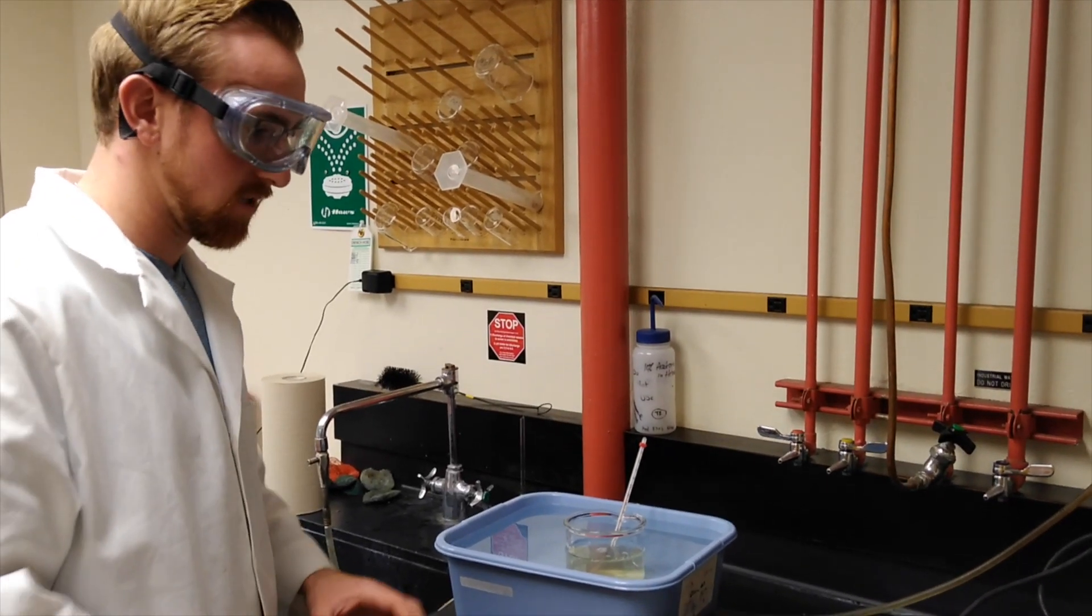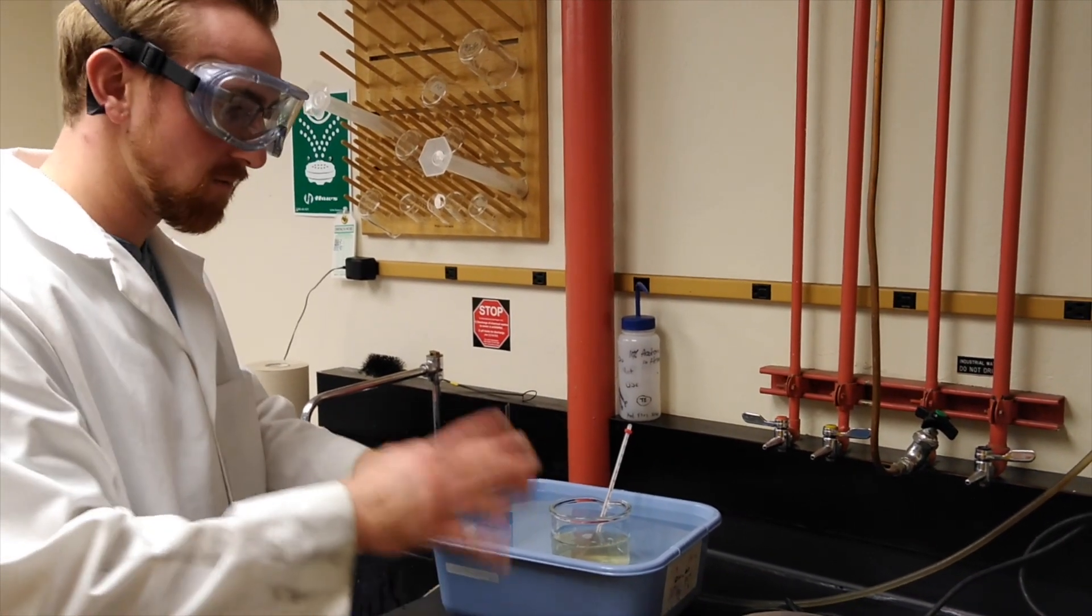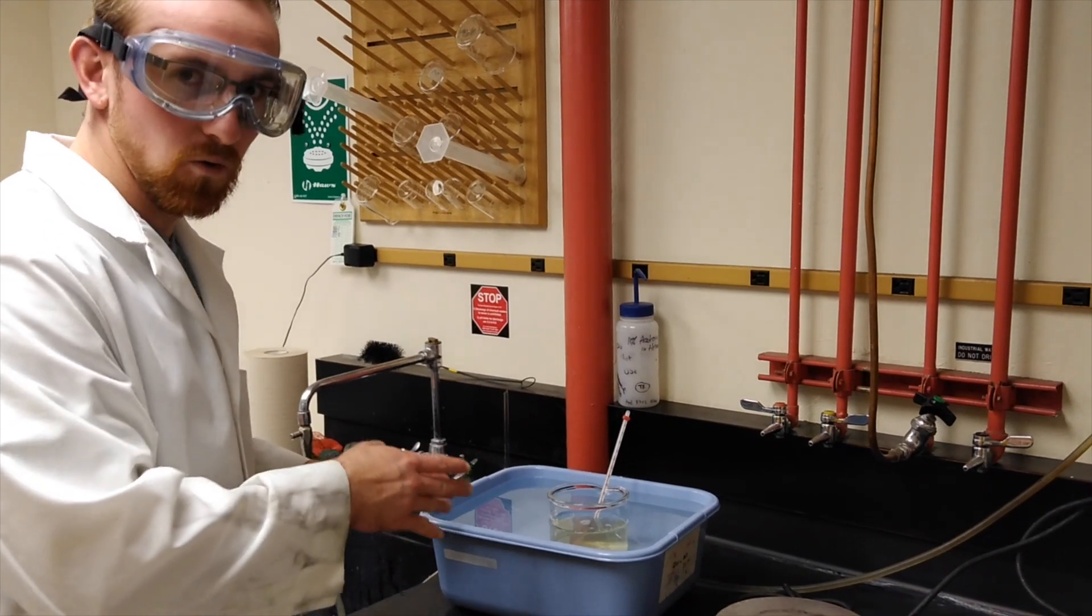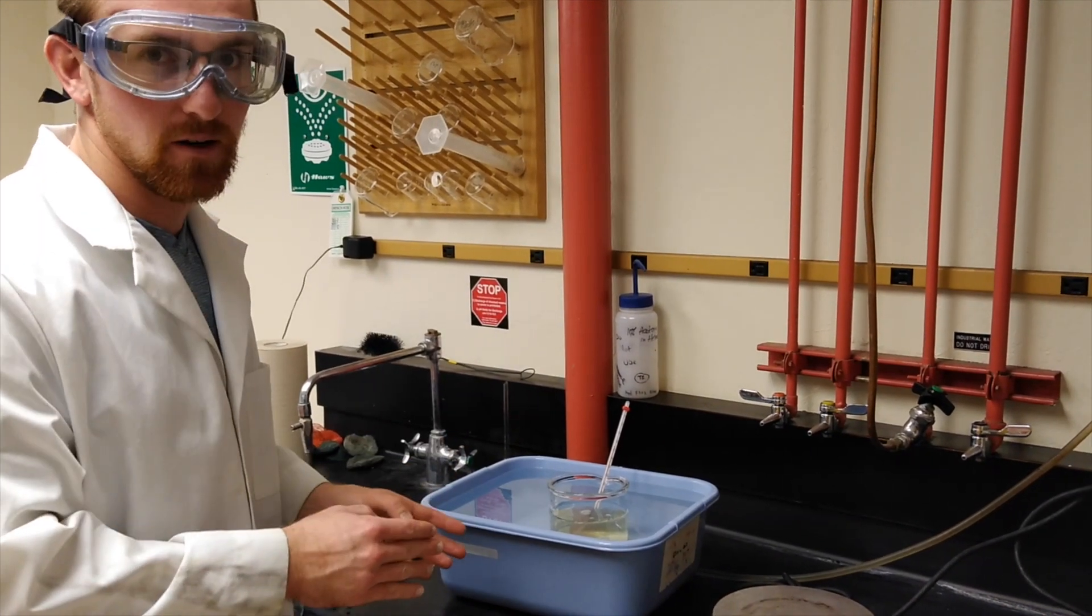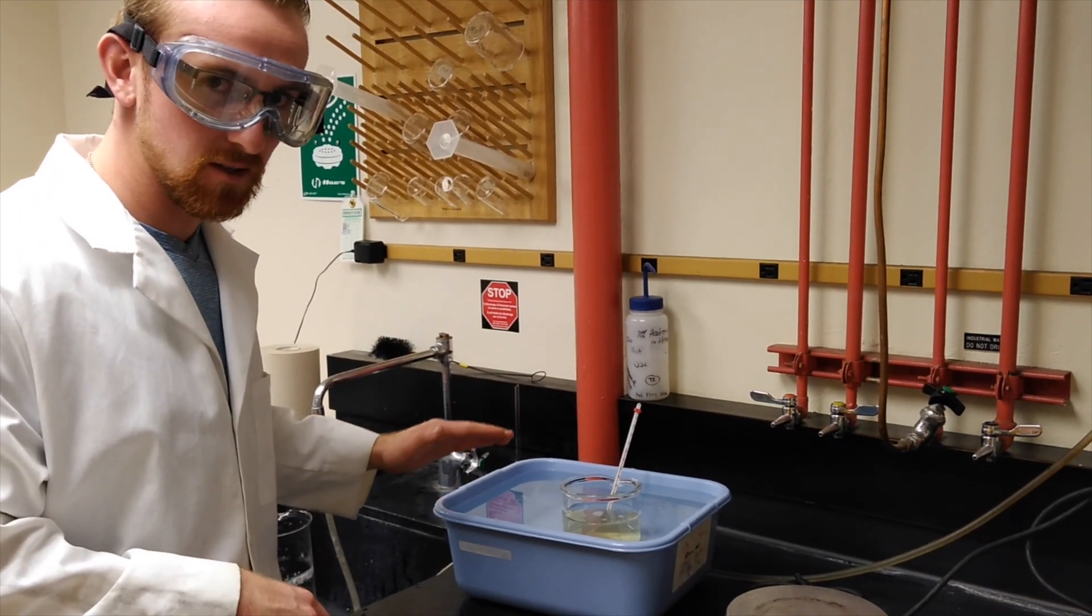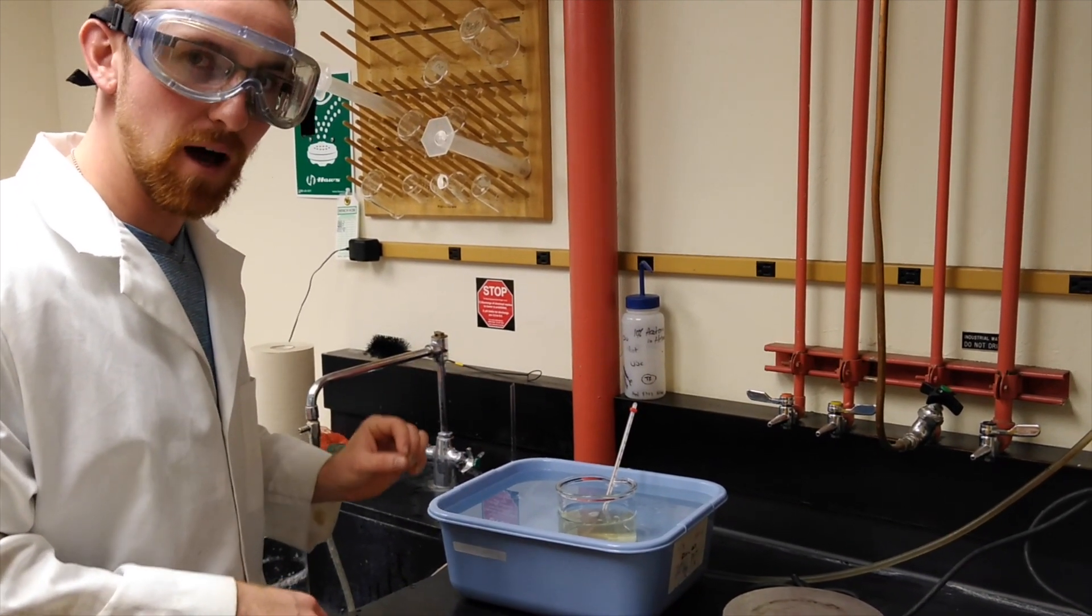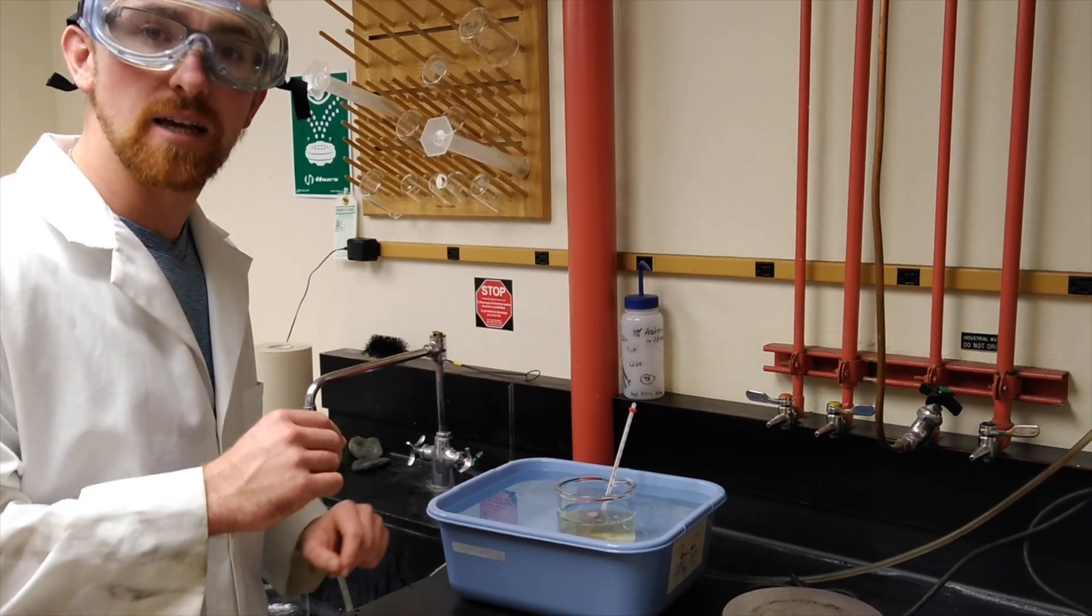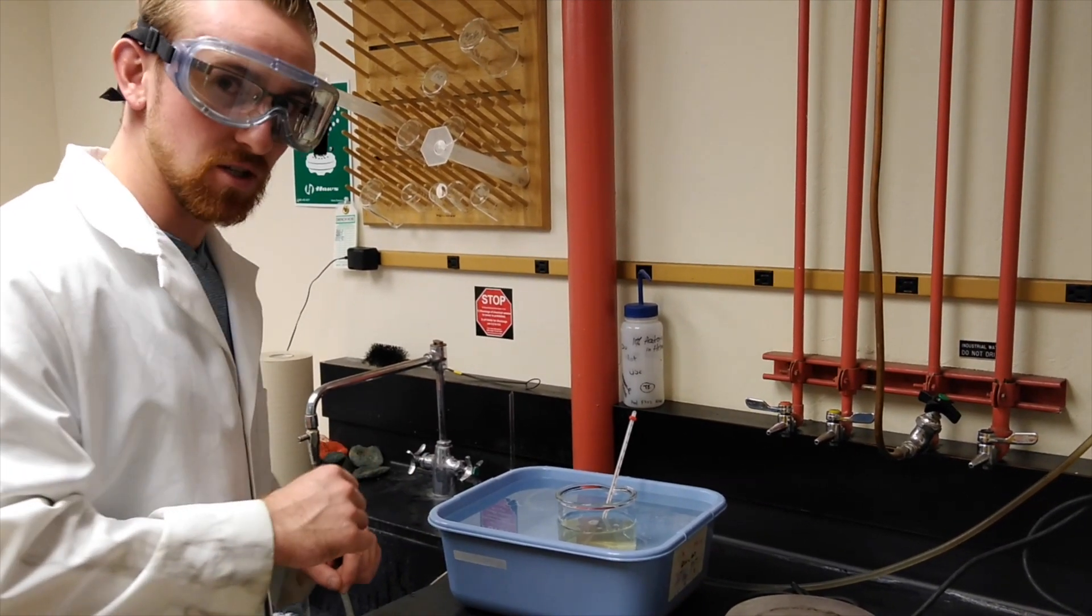So now what we have done is we have transferred our sugar solution from the hot plate into a cooling bath. What we're trying to do here is limit the amount of time needed for crystallization. We will lower the temperature to 70 degrees Celsius, and then we'll remove it from the cooling bath and insert our nucleation site to begin the crystallization process.